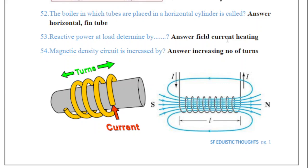Reactive power at the load is determined by the field current heating. Question 54 is asking about how magnetic flux density in a circuit is increased. Basically it is increased by increasing the number of turns. As shown in the diagram, as we increase the number of turns, the magnetic field circuit also increases. There are four ways to increase the strength of a magnetic field. Number one is by increasing the number of turns. Number two is by increasing the strength of current flow.